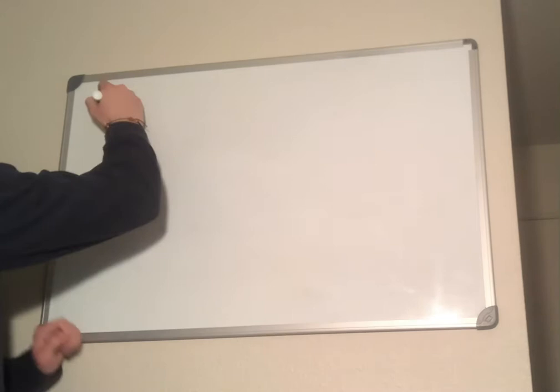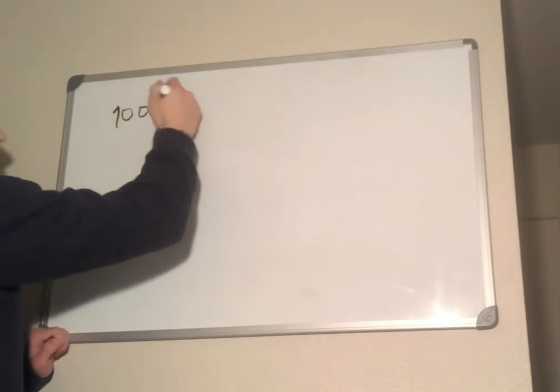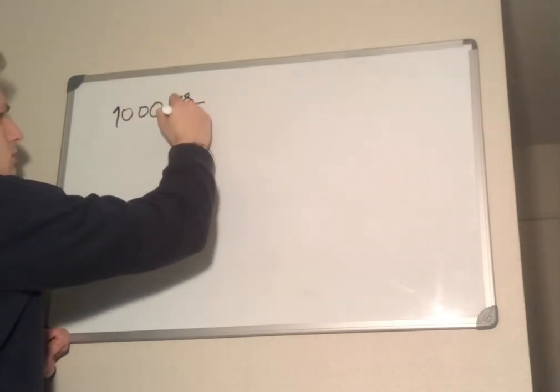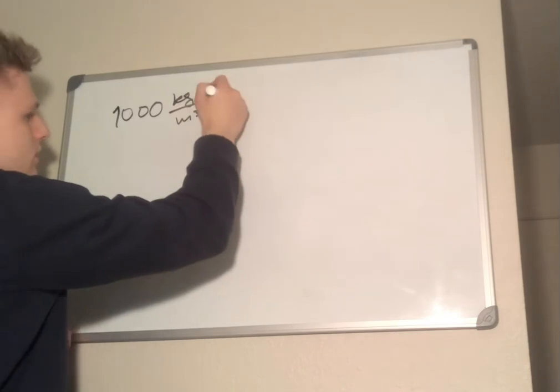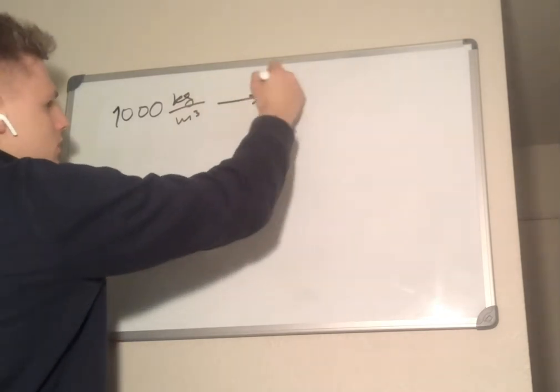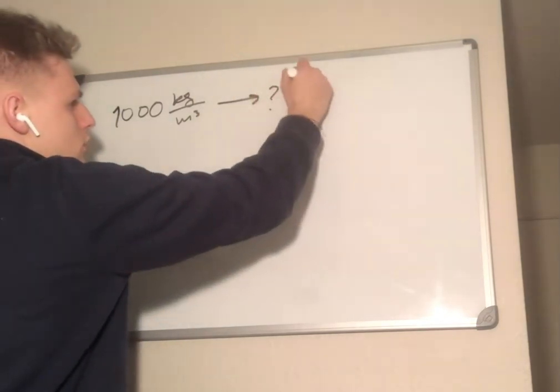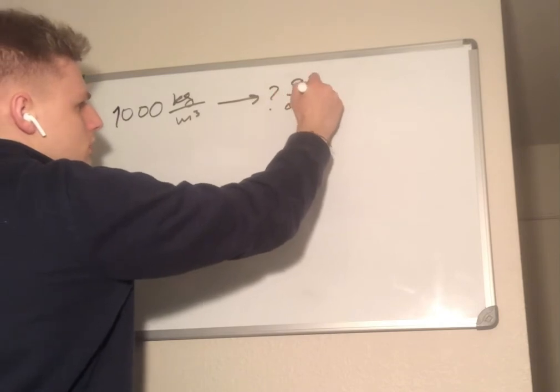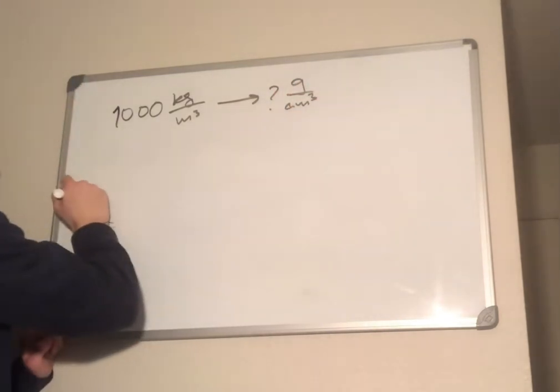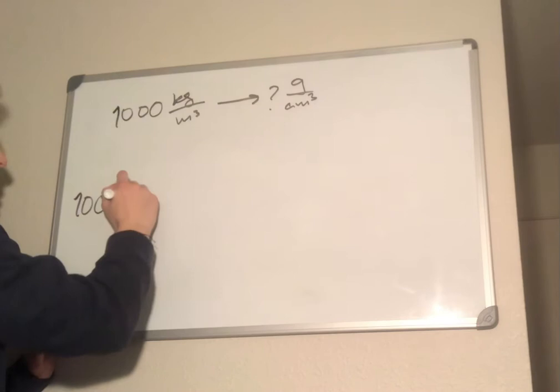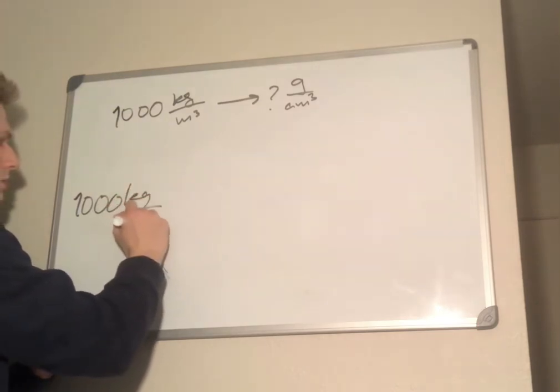We want to go from 1,000 kilograms per meter cubed, which is the density of water, to grams per cubic centimeter. So to start this out, we have kilograms per meter cubed.